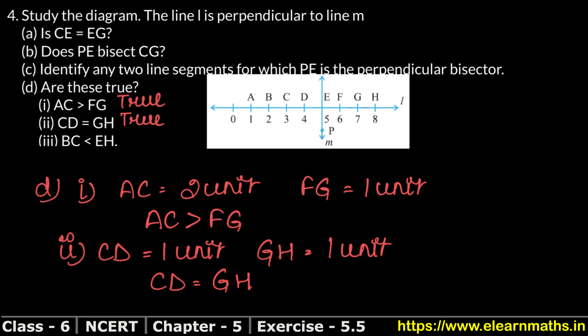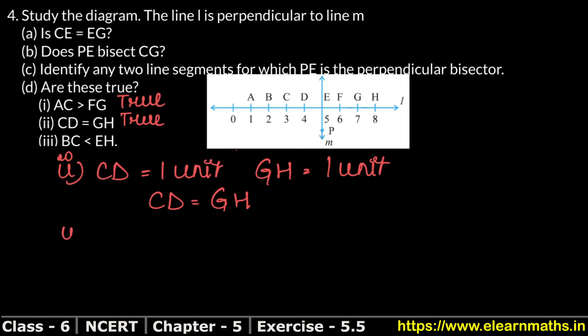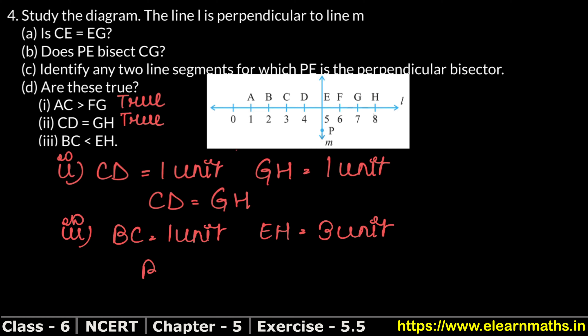Last part: is BC less than EH? BC is 1 unit and EH is 3 units. So we can write: BC is 1 unit and EH is 3 units. Therefore BC is less than EH — this statement is also TRUE. Answer complete.